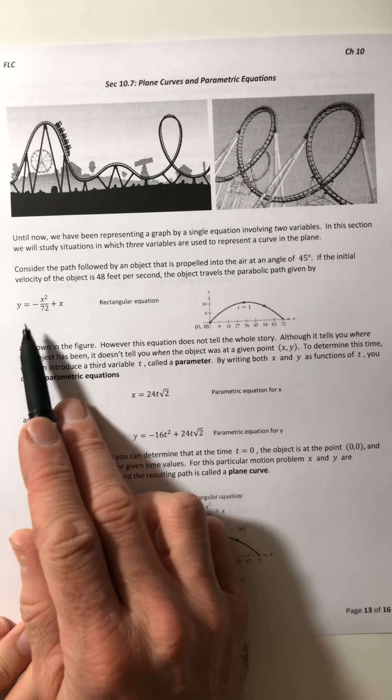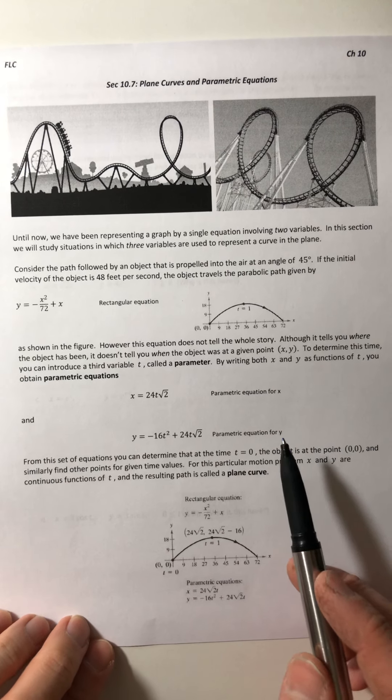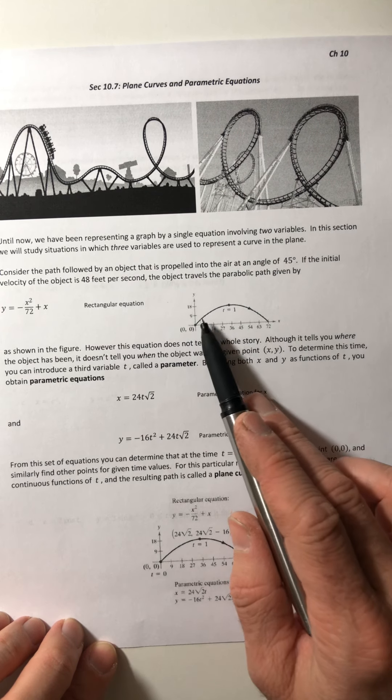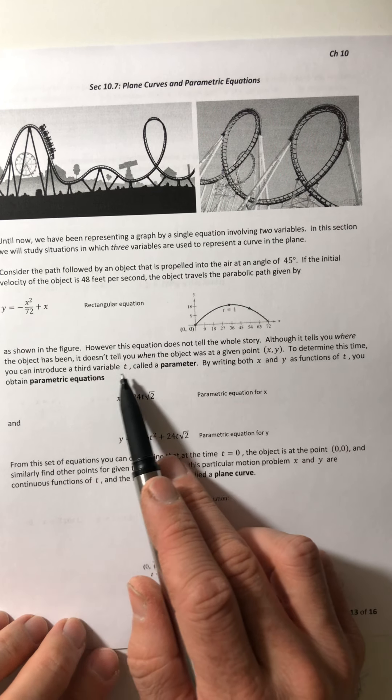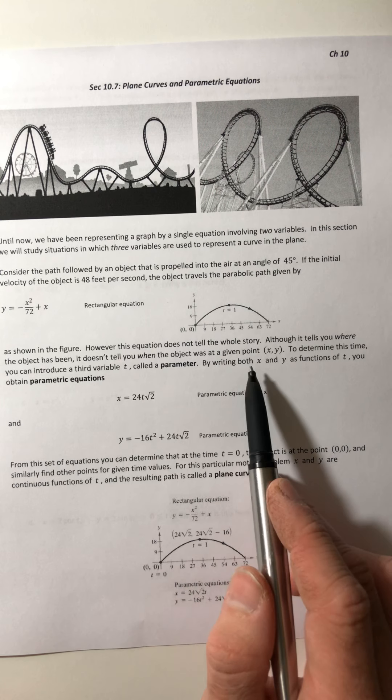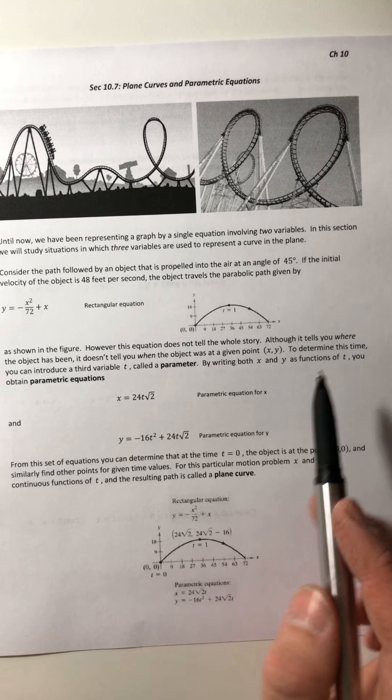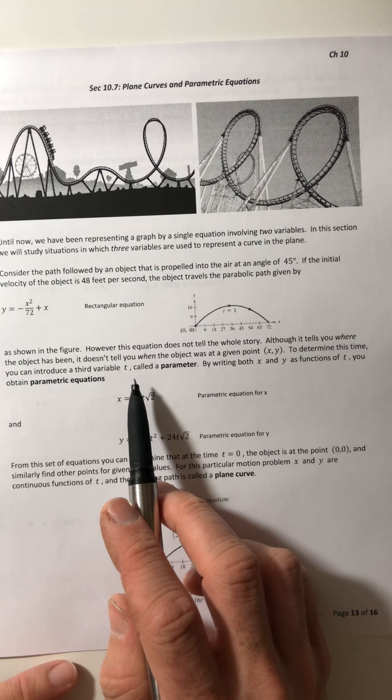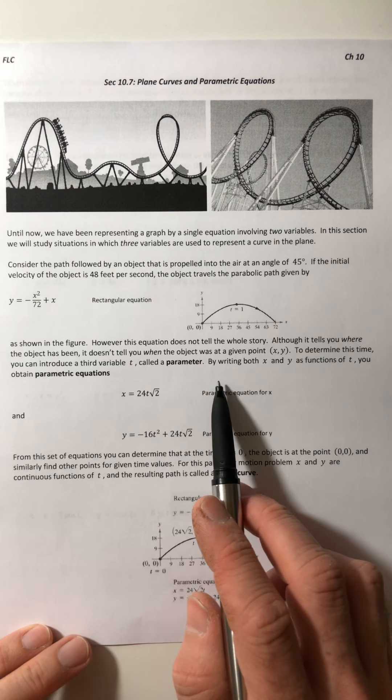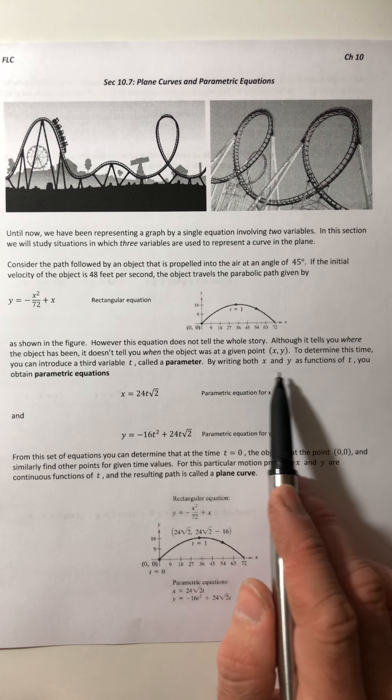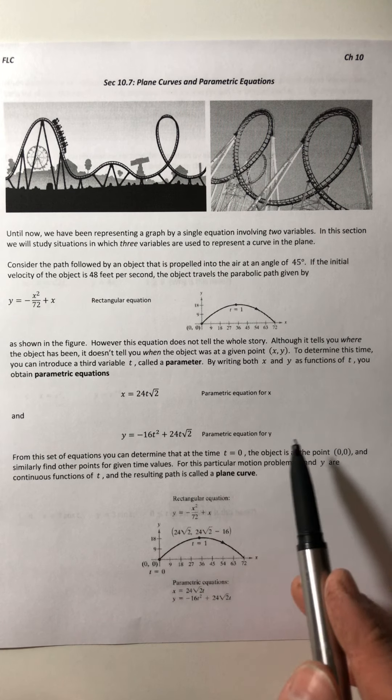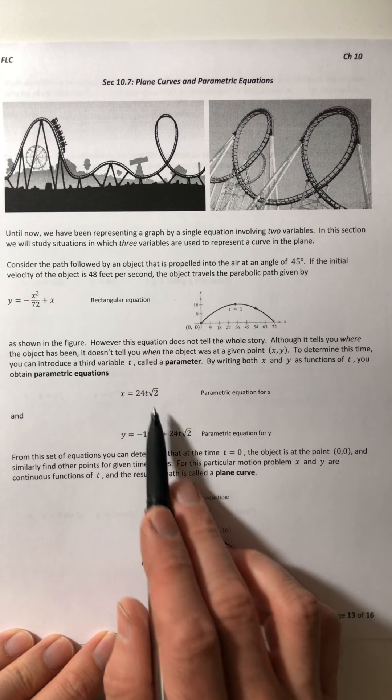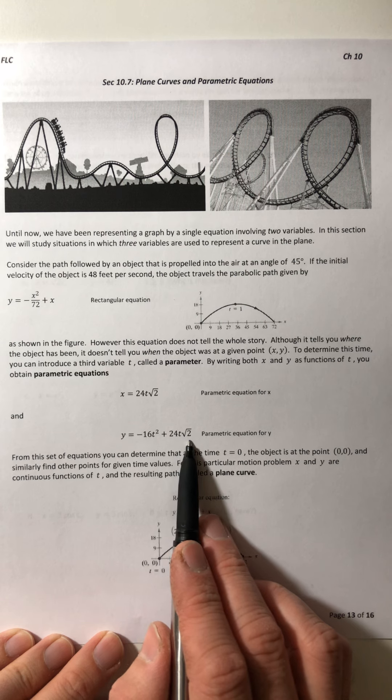However, this equation doesn't tell you the whole story. Although it tells you where the object has been, because you can plot it, it doesn't tell you when the object was at a given point x and y. To determine this time, you can introduce a third variable t called a parameter. By writing both x and y as functions of t, you obtain parametric equations, one for x and a second one for y.